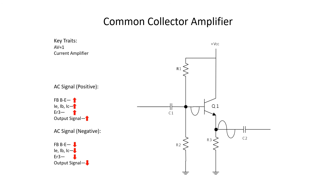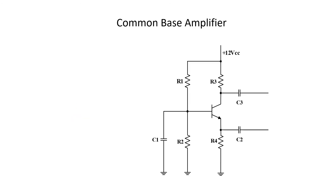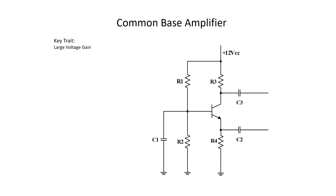Now let's move on to the last amplifier configuration: the common base amplifier. The input is received on the emitter and the output is taken from the collector. Notice we have a voltage divider network — R1 and R2 — and C1 on the base, which keeps the base voltage constant. C1 is a bypass capacitor that prevents any AC from being developed there. A key trait of the common base amplifier is that it has a large voltage gain, so you can identify it simply by how large the AV is.